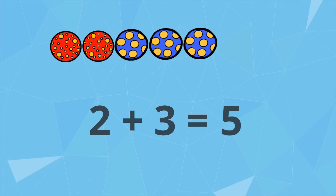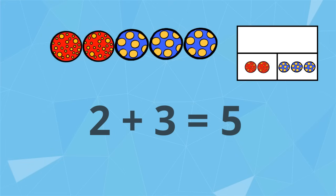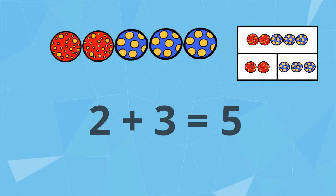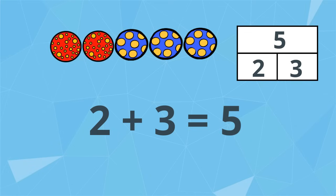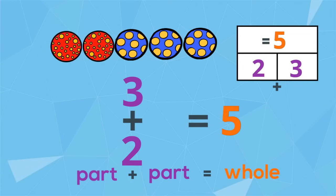We can represent this equation using a part-part-whole model. The parts go in these small boxes, and the whole goes in the larger box. This is another way to show that 2 and 3 make 5. The part plus the part equals the whole. That means that 3 plus 2 must also equal 5.